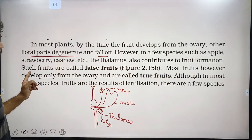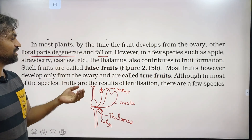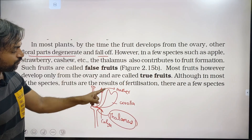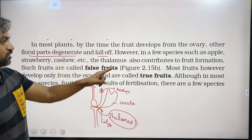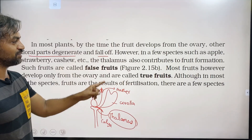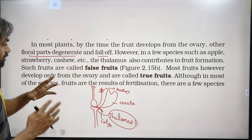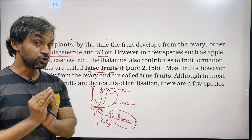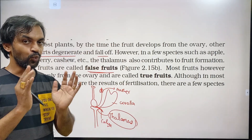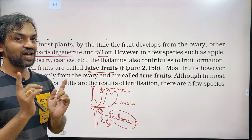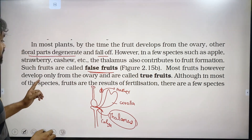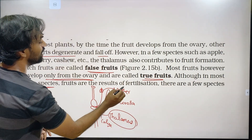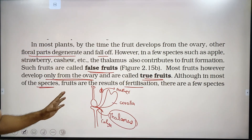However, in a few species such as apple, strawberry, and cashew nut, the thalamus also contributes to fruit formation. The thalamus is the base on which all floral parts are attached. When the thalamus is involved in fruit formation — as in strawberry, cashew, and apple — such fruits are called false fruits. Most fruits, however, develop only from the ovary and are called true fruits.